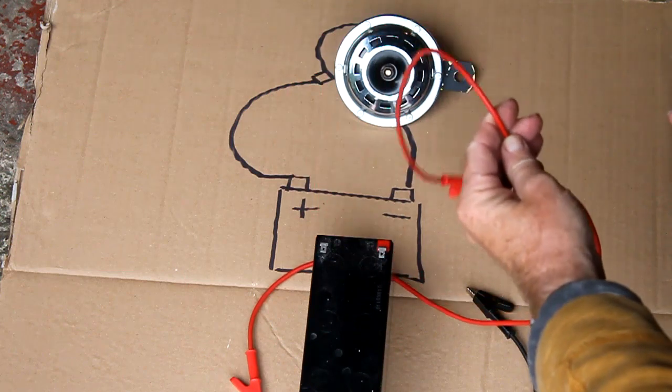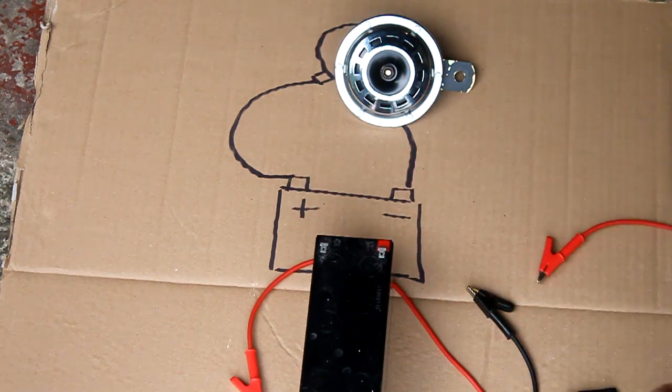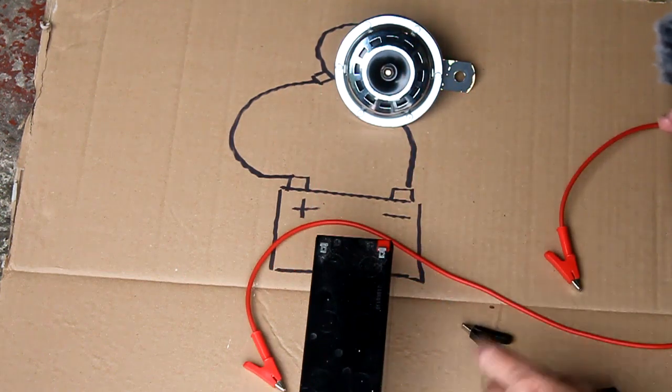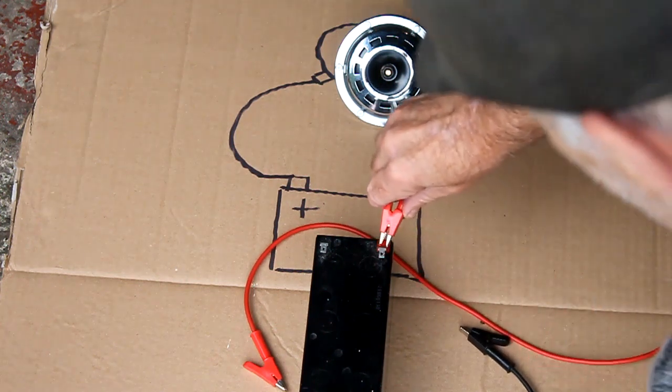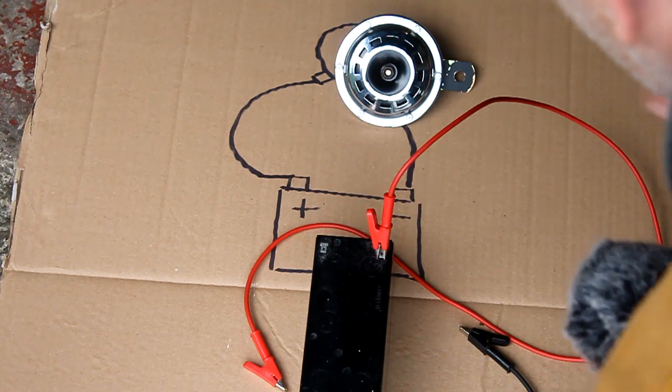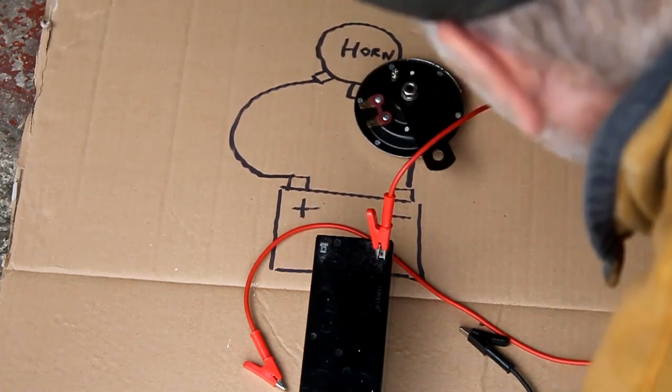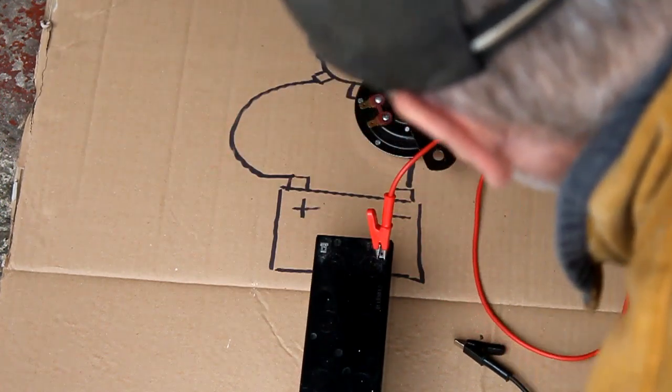And normally on motorbikes and cars, the red color is used for the positive side of a circuit and the black for the earth side. Not always, but most of the time. So let's connect this little wire here to the horn from the battery.